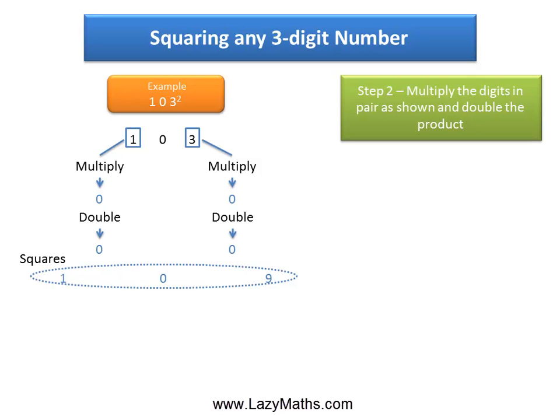And then we take 1 and 3 as the third pair. 1 times 3 is 3, and double of 3 is 6.